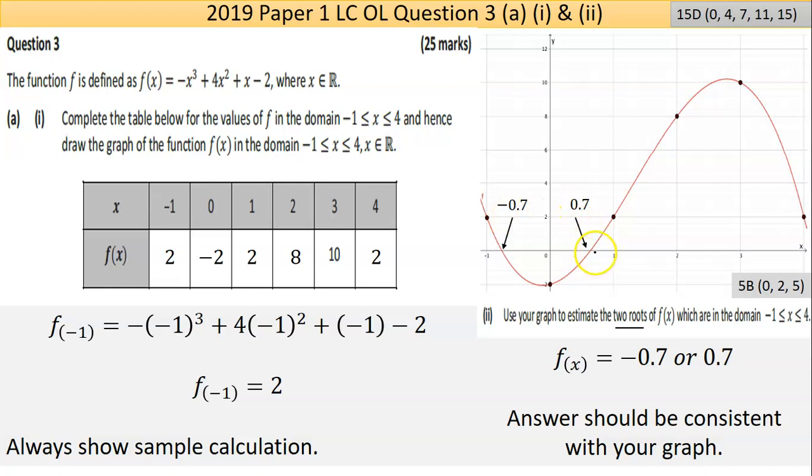They're only looking for where on the x-axis does this curve cut between minus 1 and 4. That's basically what it's saying, which is these two points here. So I'm judging it as being 0.7 and negative 0.7. Now, your graph may be slightly different because you've drawn it with your hand. So whatever your graph says, wherever the curve cuts the x-axis, they're the roots. That's it, part 2.